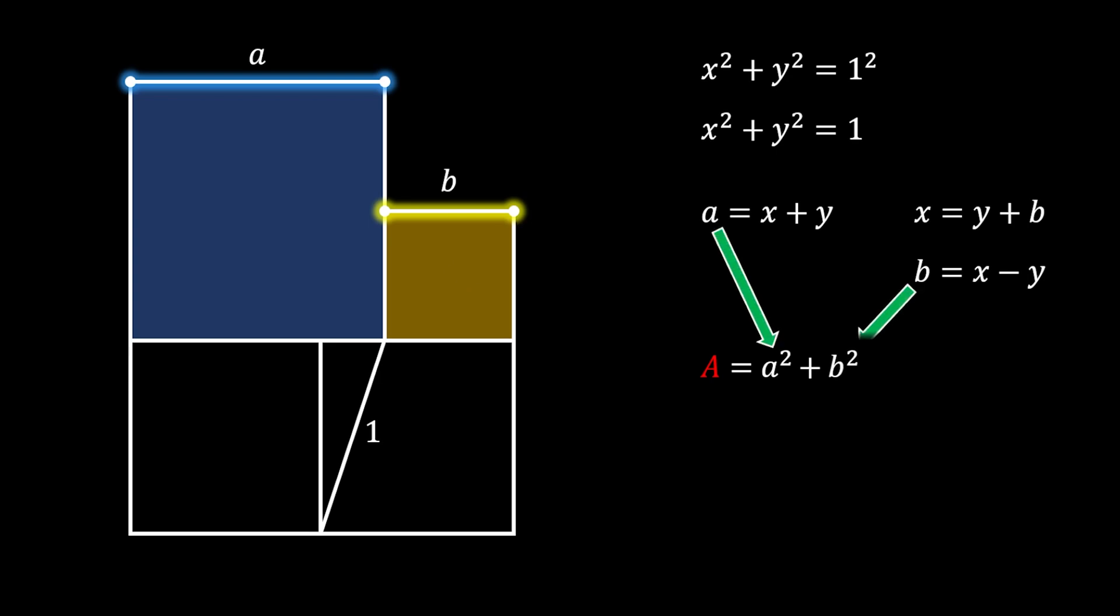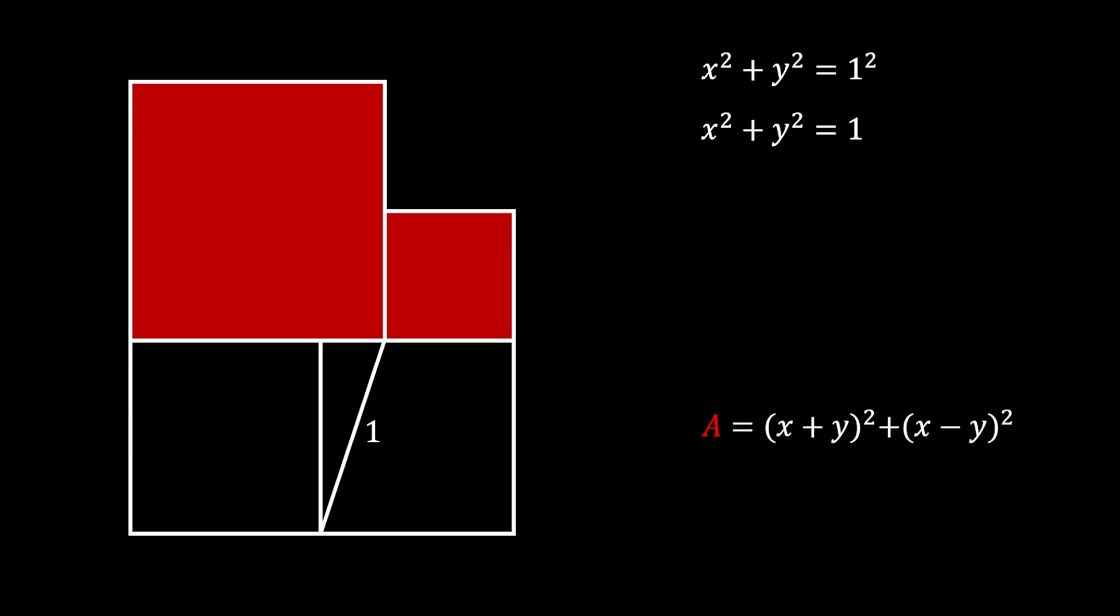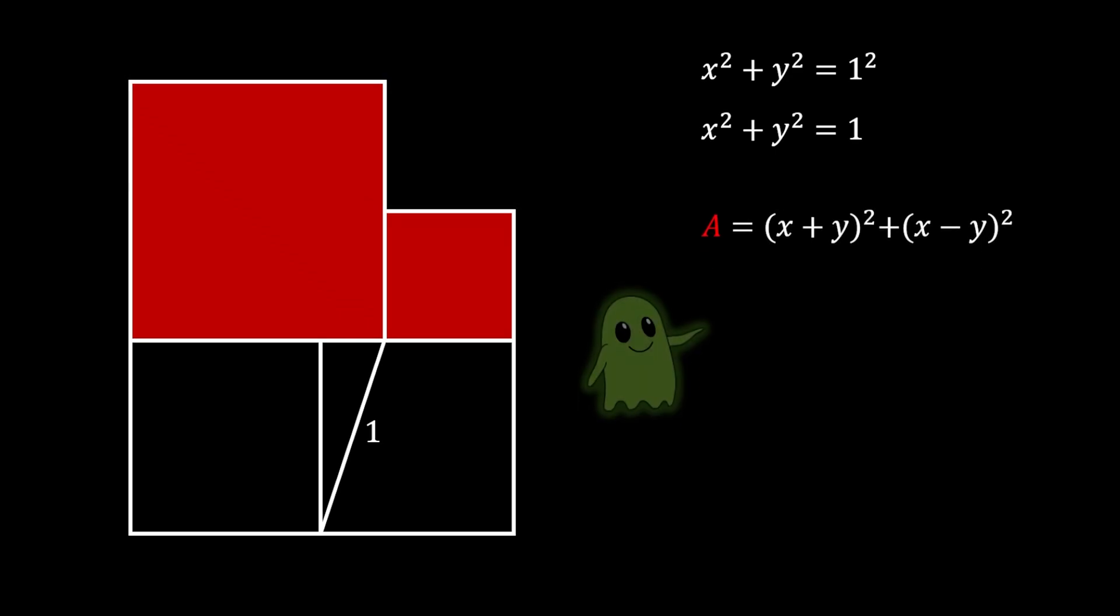Now, we will substitute the values of a and b, which we got earlier, and we will get the following equation. Now, from here, we can simplify this equation by expanding its terms using the formula of square of binomial. If we apply this formula for both of our terms, we will get the following equation.